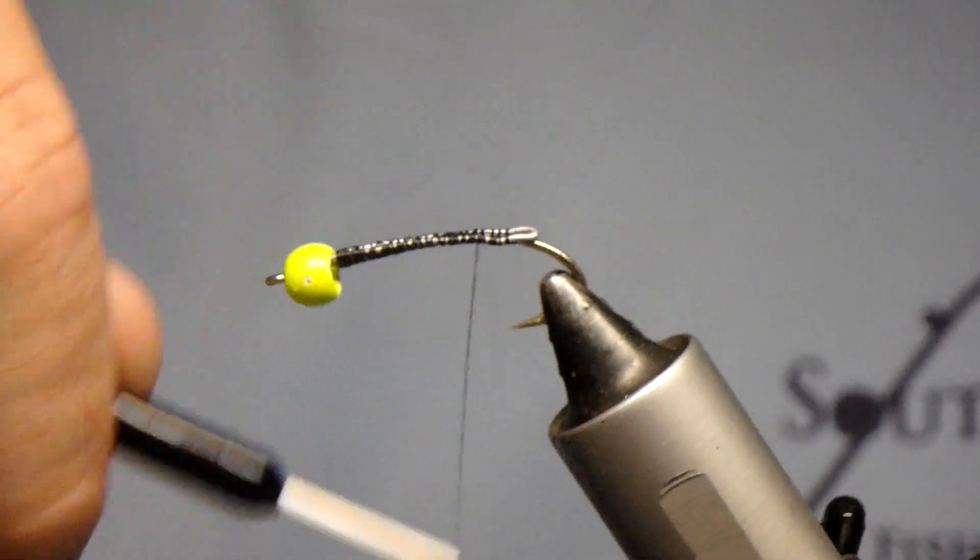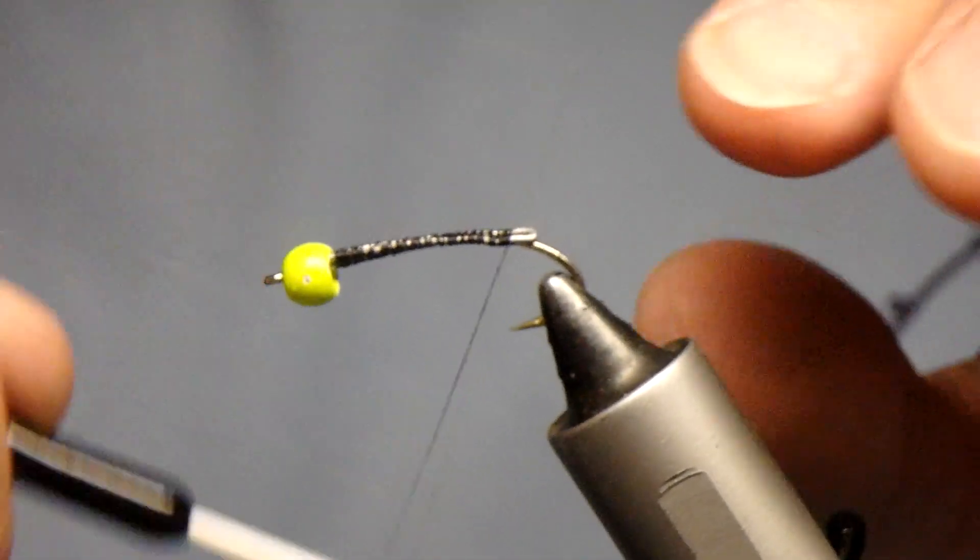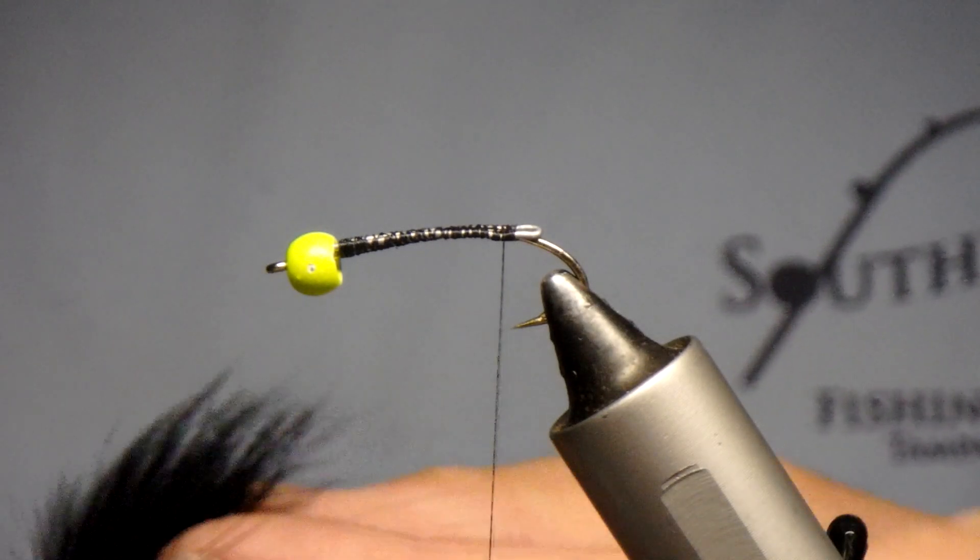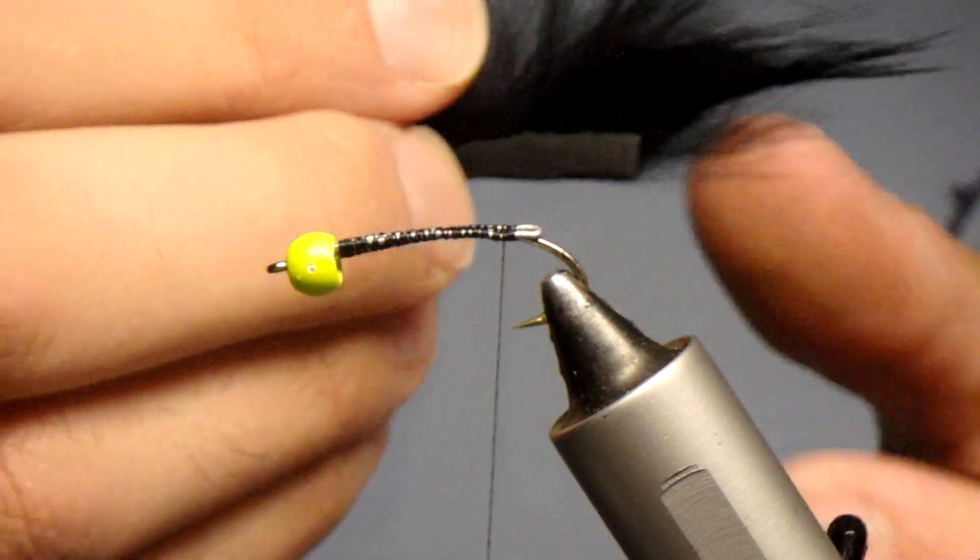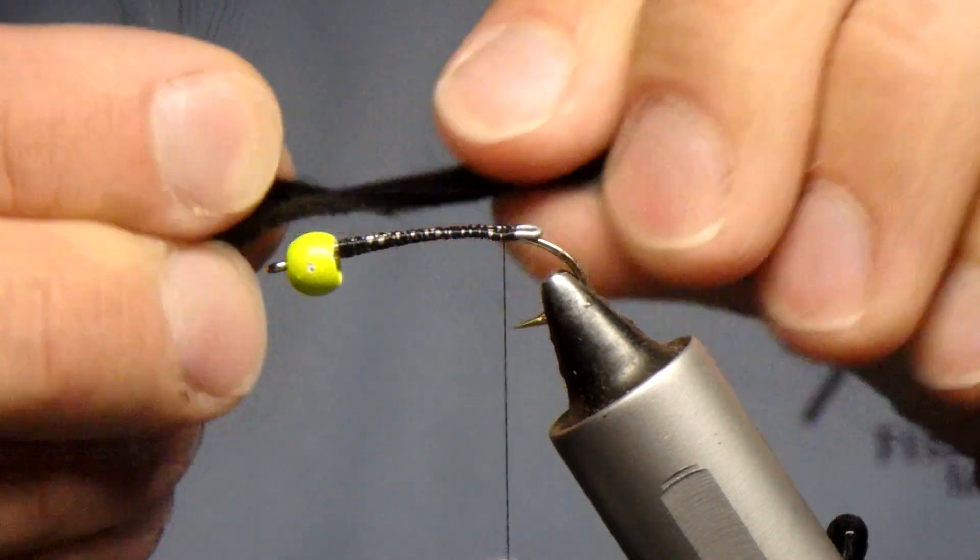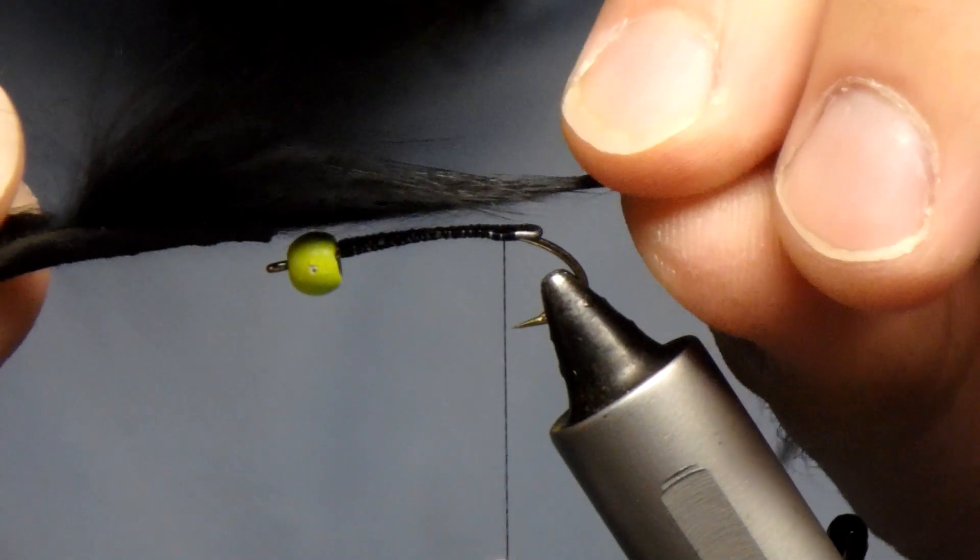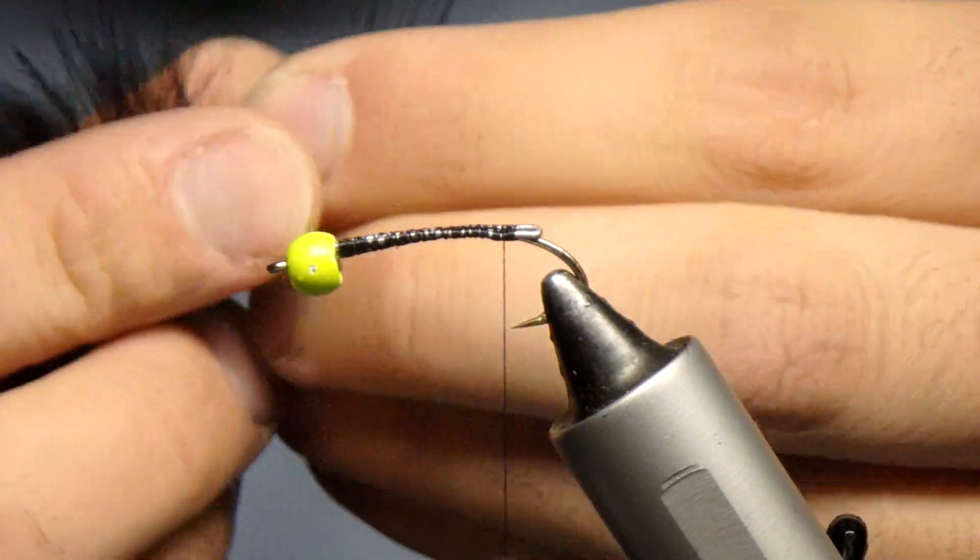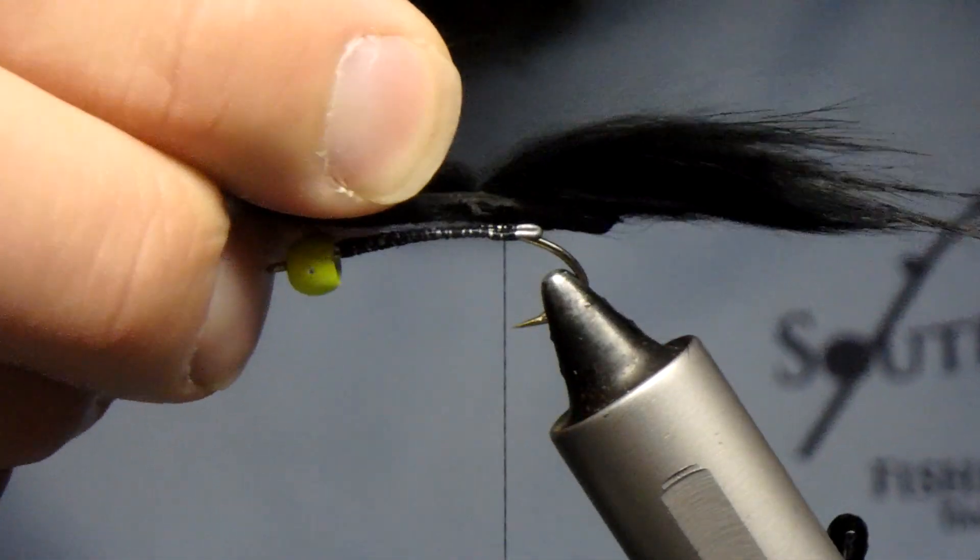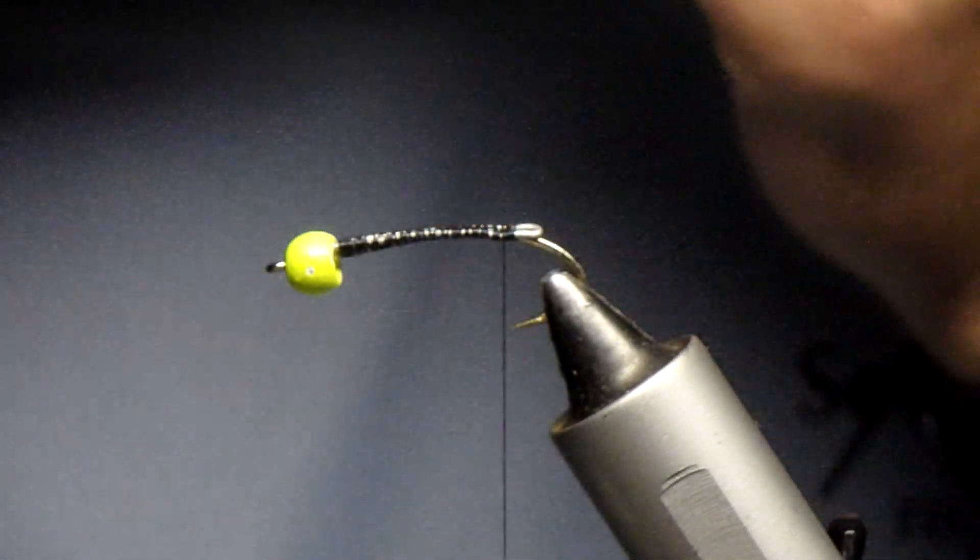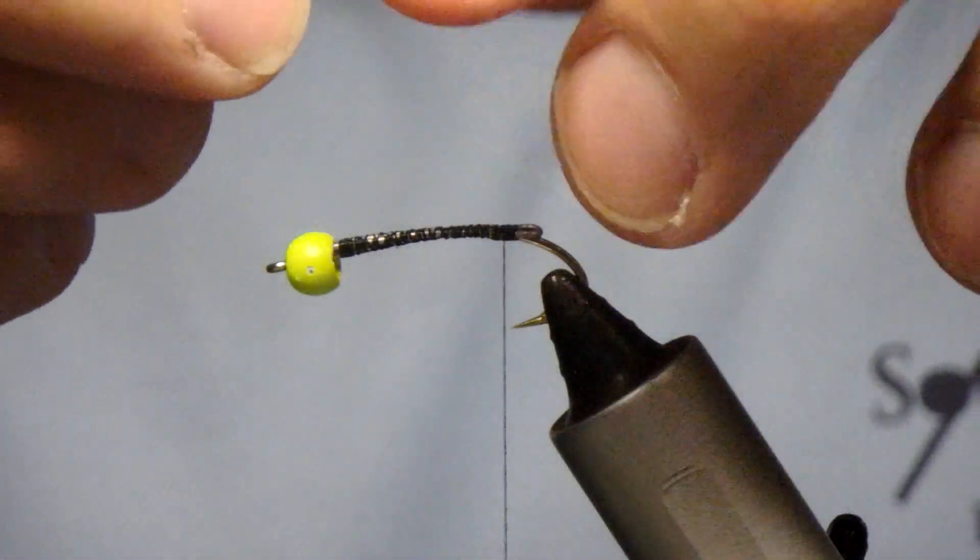You're going to put your thread towards the back of the hook here. Now you're going to take your zonker and you want to make yourself a tail and you've got to separate these fibers here and the tail should be about one and a half the length of the shank of your hook. You can always make the tail a little long and then cut it off later.